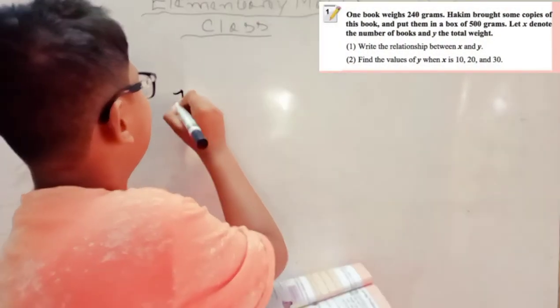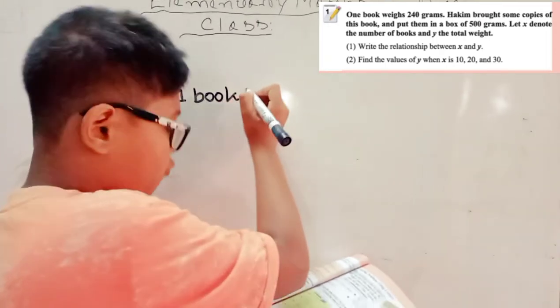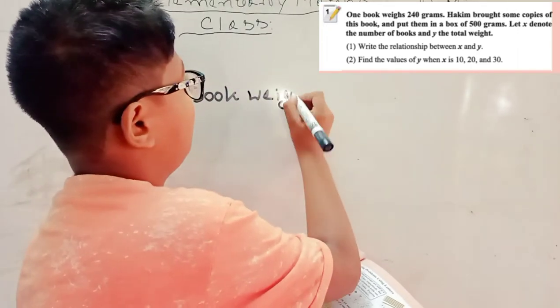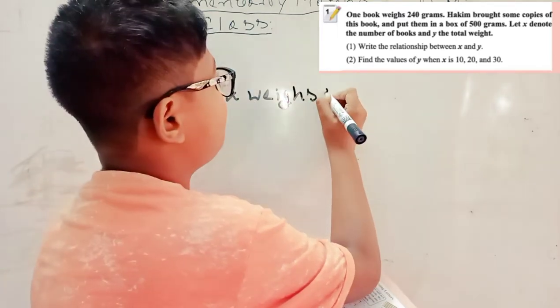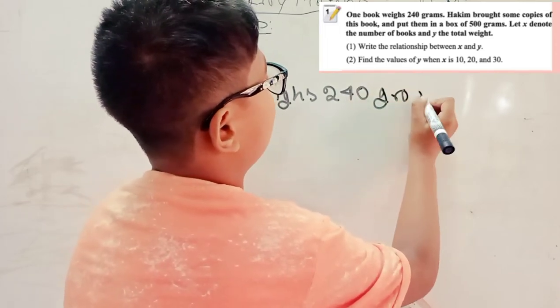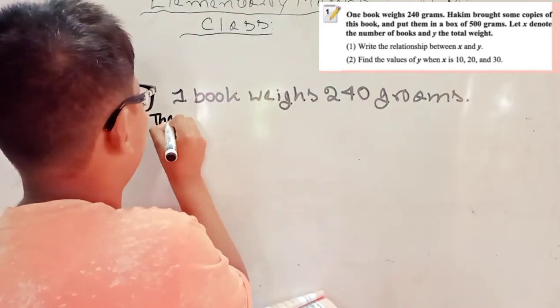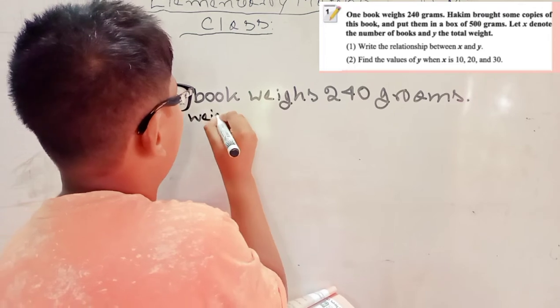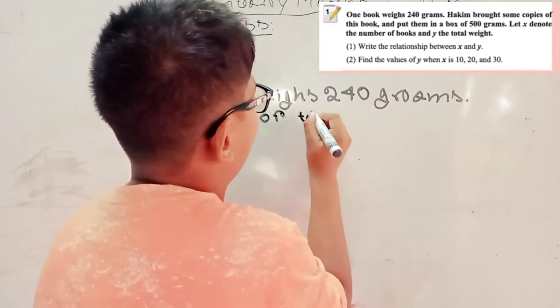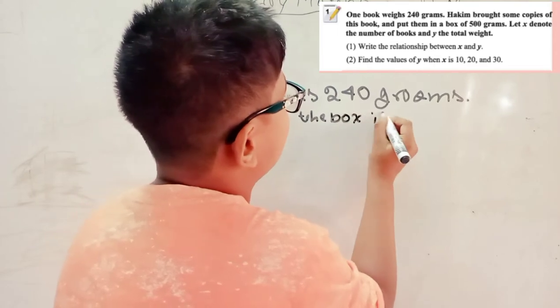One book weighs 240 grams. The weight of the box is 500 grams.